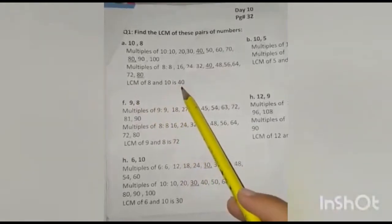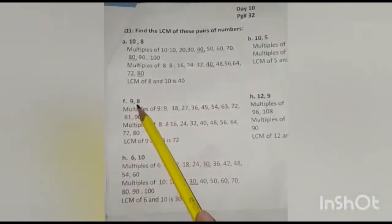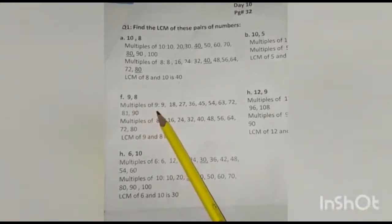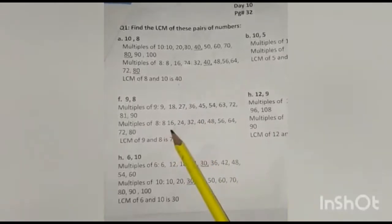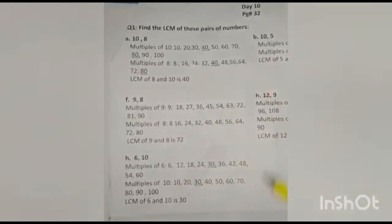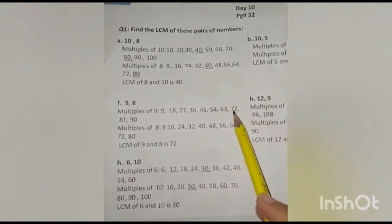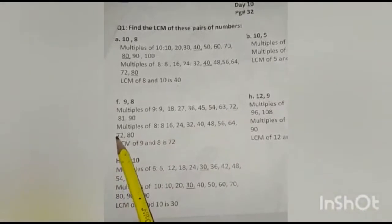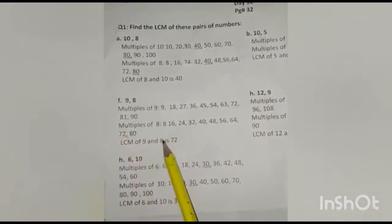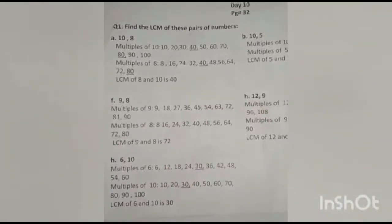LCM of 8 and 10 is 40. Now we will write multiples of 9 and multiples of 8. In this way we will underline the common ones. Both have 72 as a common multiple. So the lowest common multiple is 72. Now come to page number 33.